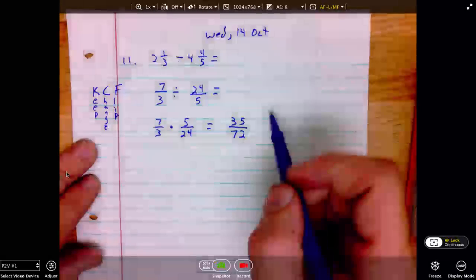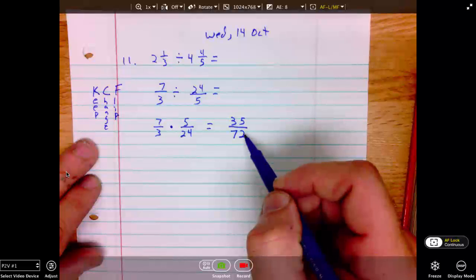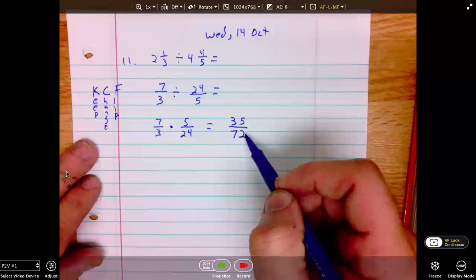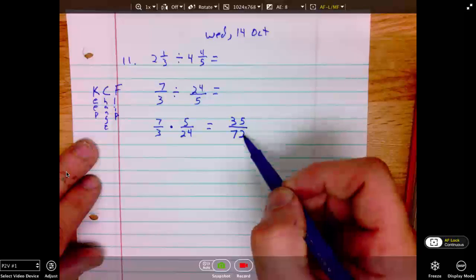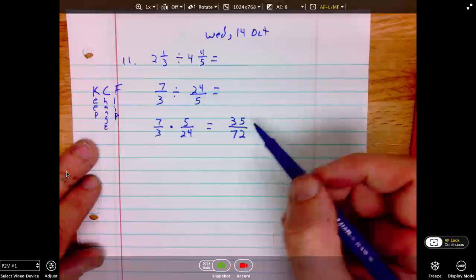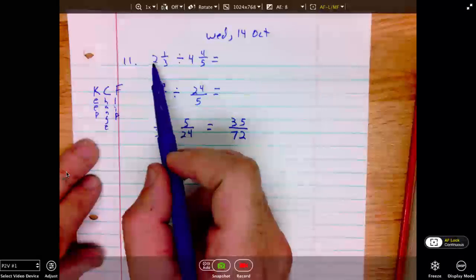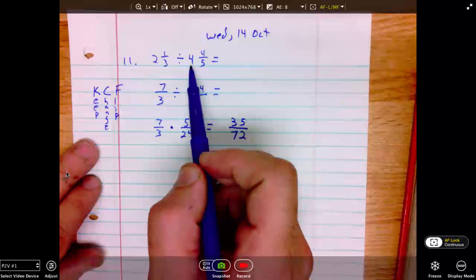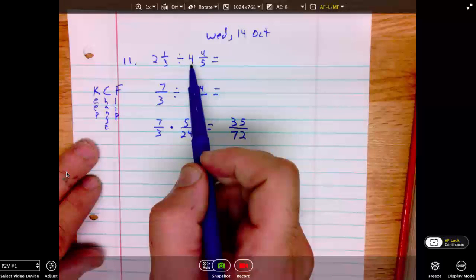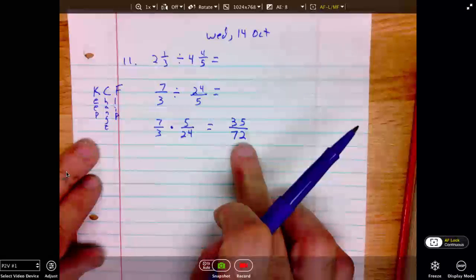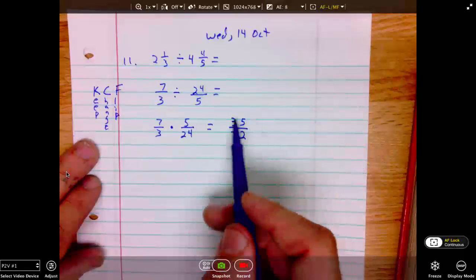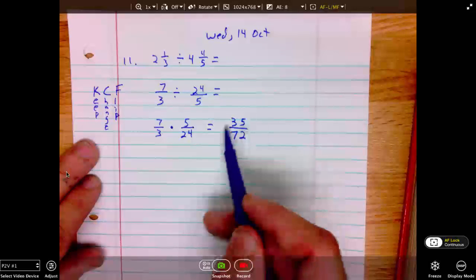And in this case, there are no common factors. 35 over 72 is as good as we can do. This number is close to 1 half. I know that because 35 over 70 would be 1 half. And if we go back up to our original, this is 2 divided by 4. We expect for this division to yield a quotient close to 1 half. This is a reasonable answer.